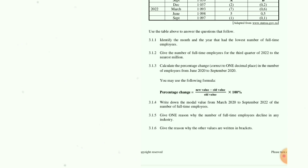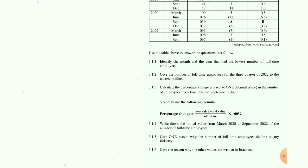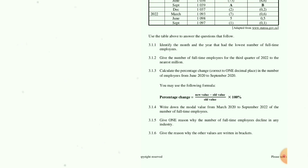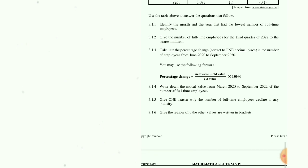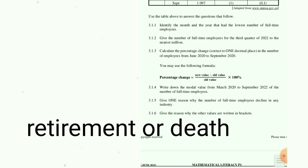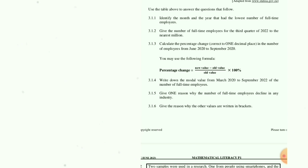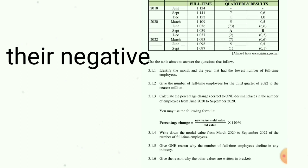Question 3.1.4: Write down the modal value from March 2020 to September 2022 — there is no modal value in this dataset. Question 3.1.5: Give one reason why the number of full-time employees declined in any industry — retirement age or death. Question 3.1.6: Give the reason why other values are written in brackets — the brackets indicate that those values are negative.